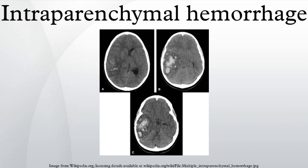Intraparenchymal haemorrhage is one extension of intracerebral haemorrhage, with bleeding within brain parenchyma. It accounts for approximately 8-13% of all strokes and results from a wide spectrum of disorders.